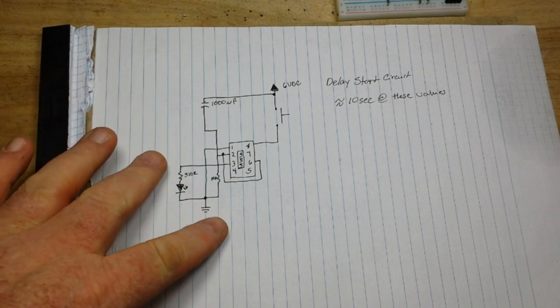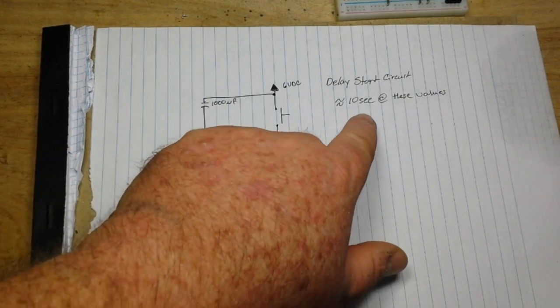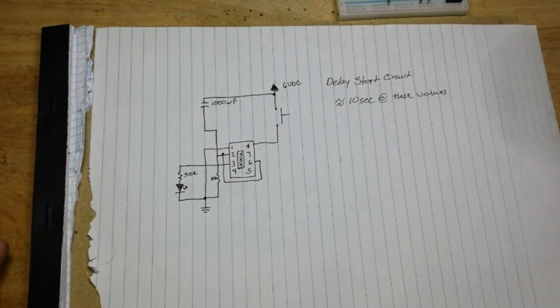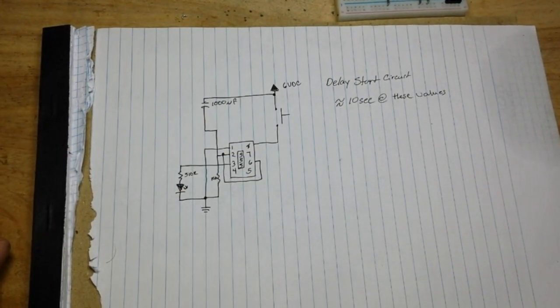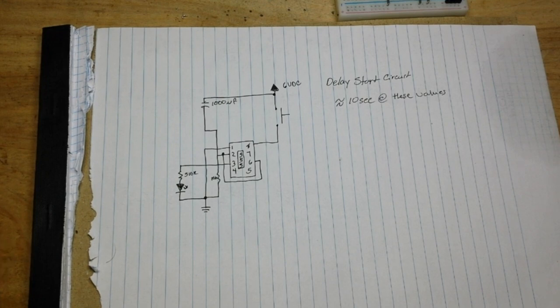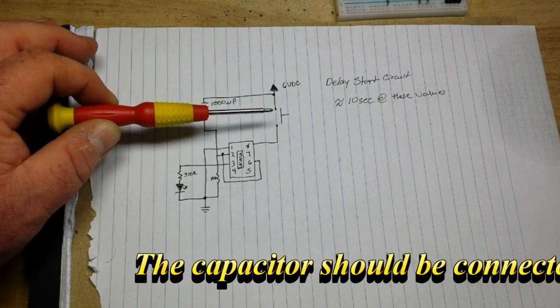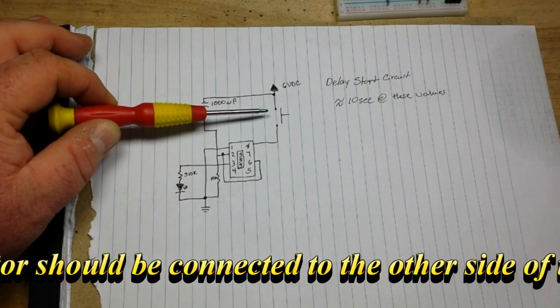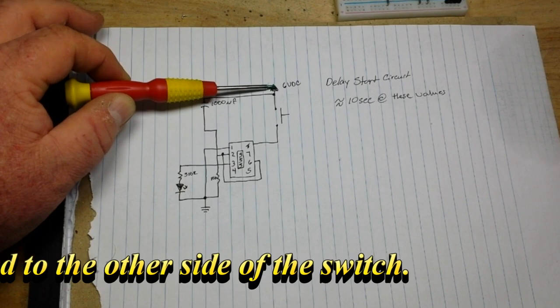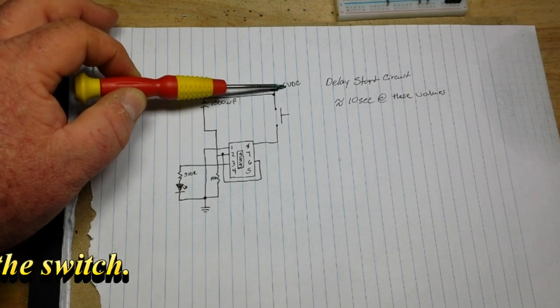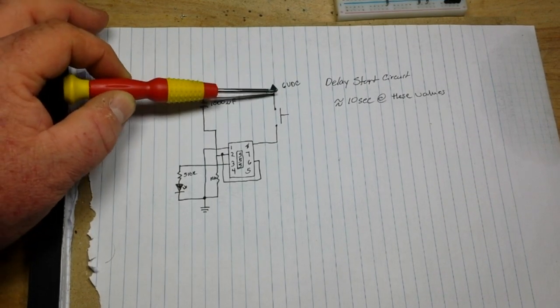I know it's not much of a prize, but hey, it's something. Anyway, the delayed start circuit at the values we have here is going to give you about 10 seconds of delayed start. So how does it work?